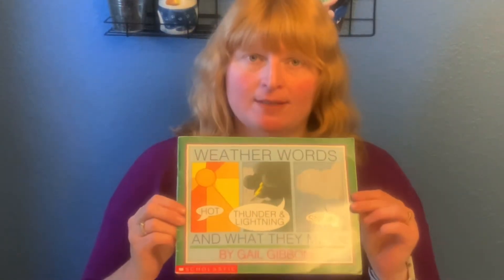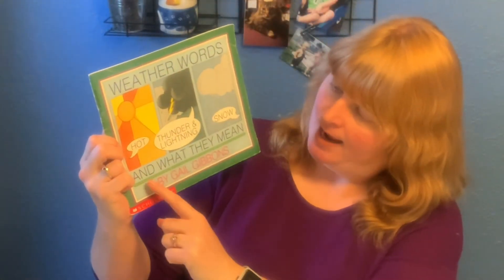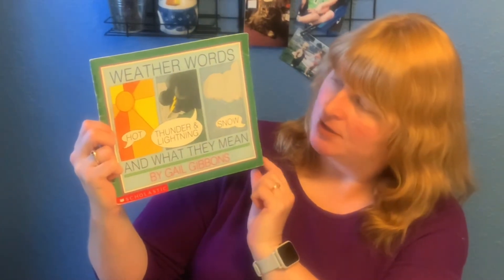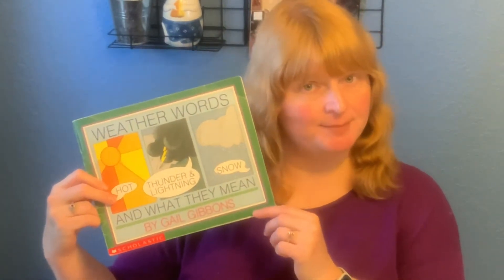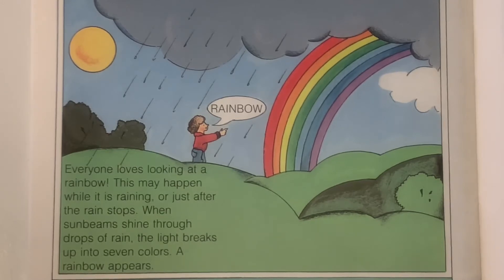First, let's start talking about a rainbow outside. This book is called Weather Words and What They Mean by Gail Gibbons. She's the author and illustrator. Let's take a look at a picture about how a rainbow is made. It says: everyone loves looking at a rainbow. This may happen while it's raining or just after the rain stops. When sunbeams shine through the drops of rain, the lights break up into seven colors, a rainbow appears.